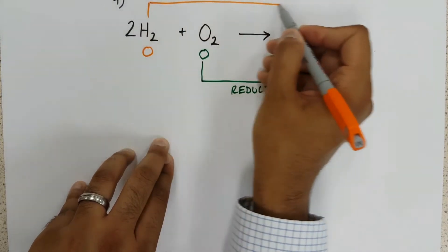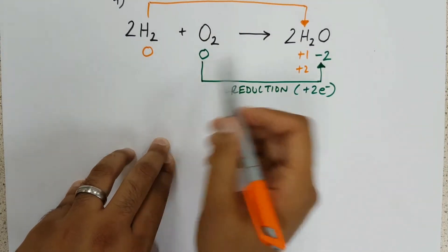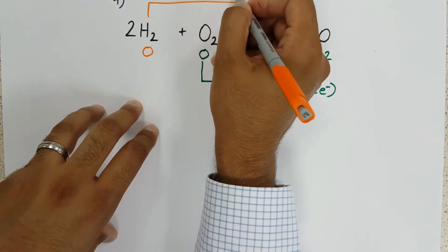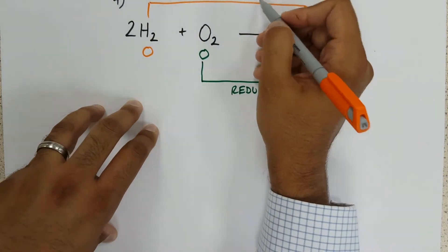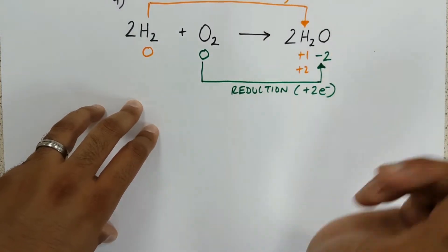Hydrogen. Because from zero to plus one, it is losing an electron and therefore oxidation. And in brackets, we'll make a note that each hydrogen loses one electron.